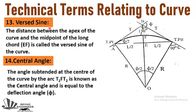The fourteenth term is central angle. The angle subtended at the center of the curve by the arc T1FT2 is known as the central angle, and it is equal to the deflection angle. The angle subtended by the arc T1FT2 is called the central angle, and it is equal to the deflection angle discussed previously.